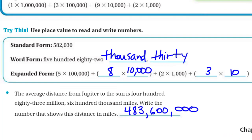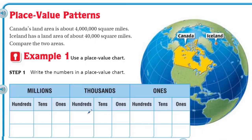Time to go to the next page. Now we have — look at that big globe — Canada, Iceland. Canada's land area is about four million square miles. Iceland has a land area of about forty thousand square miles. Compare the two areas. Right away we can see that Canada's land area is a lot more than Iceland.